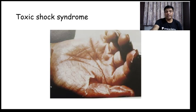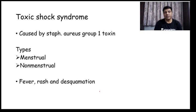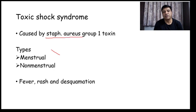This is a clinical photograph of toxic shock syndrome, another syndrome caused by Staphylococcus. It is caused by Staph aureus group 1 toxin. The various types are menstrual and non-menstrual, and it is characterized by fever, rash, and desquamation.